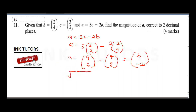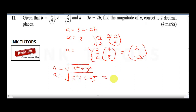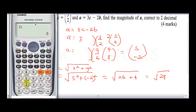Now to get the magnitude of a, we use the formula: magnitude = square root of (x² + y²). So the magnitude of a is the square root of 5² plus (-2)², which gives us the square root of 25 plus 4, which is the square root of 29.